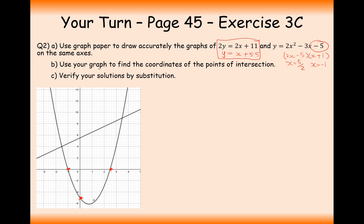The next part here, B, is to use your graph to find the coordinates of the points of intersection. So, I believe this here would be minus 1.5 at 4. And the second point up here is going to be 3.5, 9. Verify your solutions by substitution.